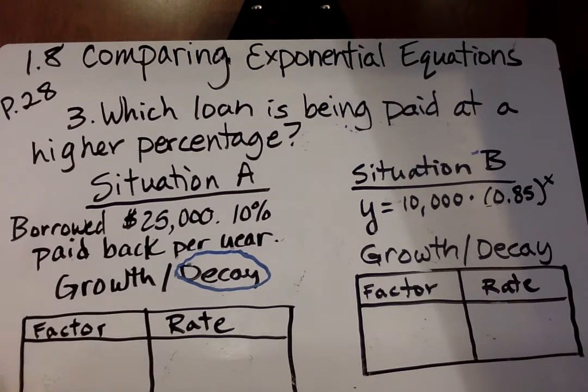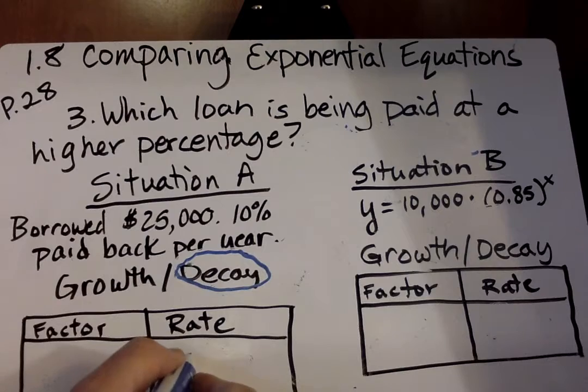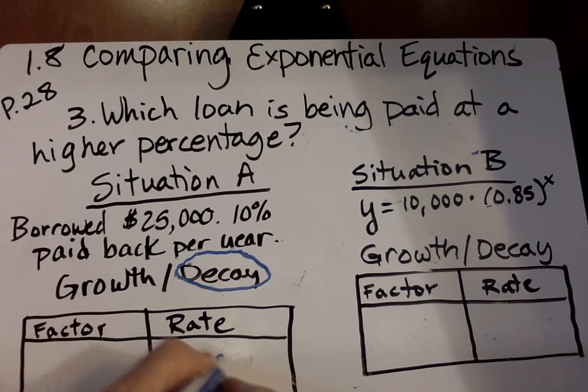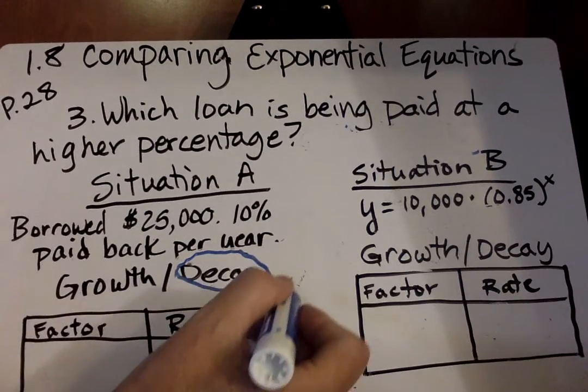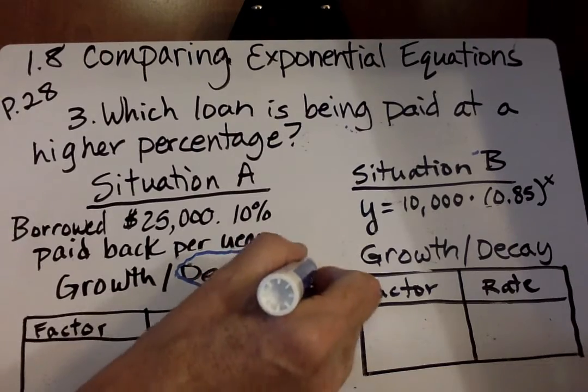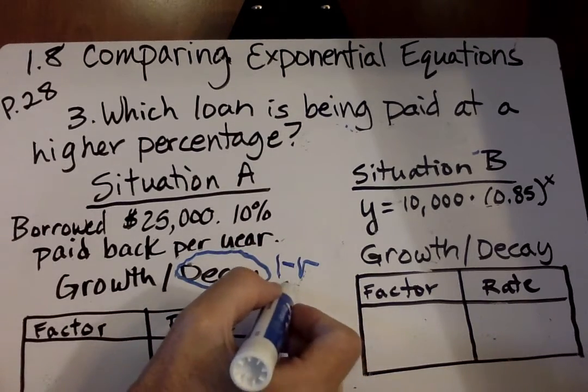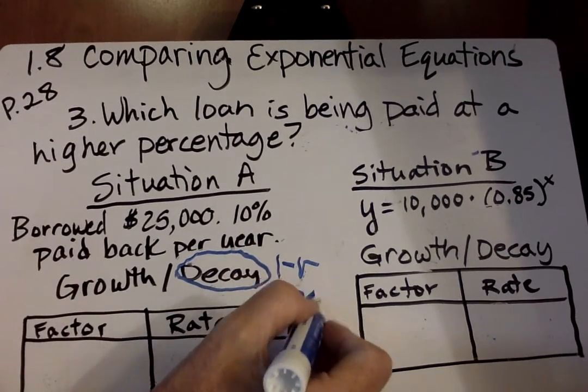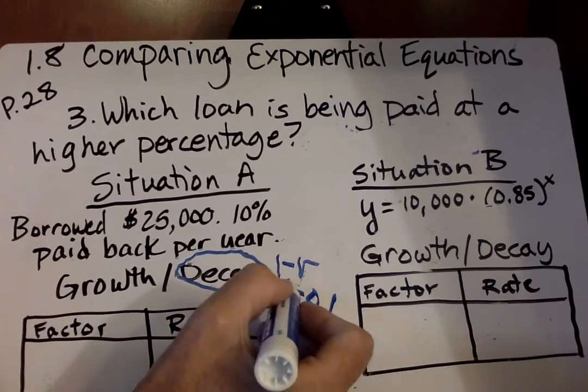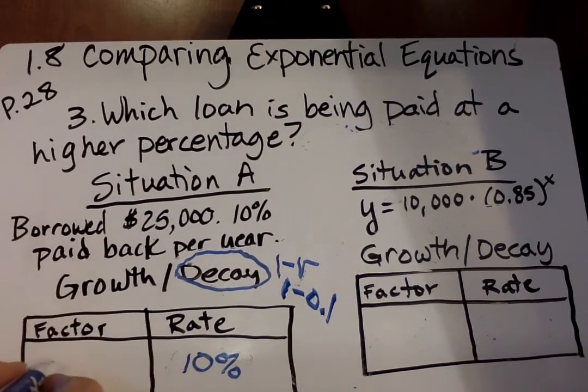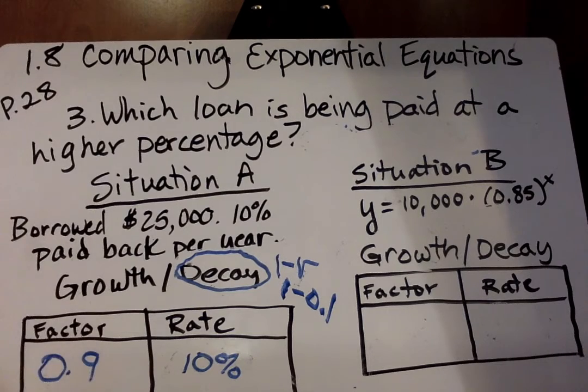What is our factor? Well, we could start with our rate because that goes at 10%. And remember if it's decay, it's one minus your rate. So one minus 10%, we change 10% to a decimal. One minus 0.1 and our factor is 0.9.